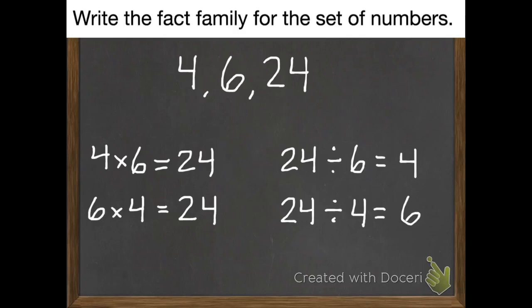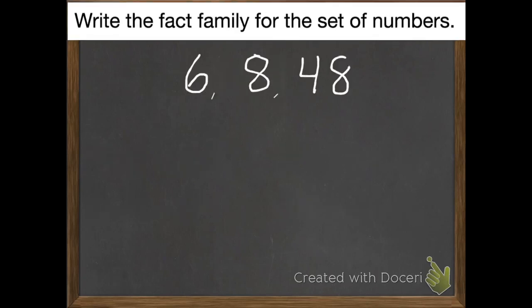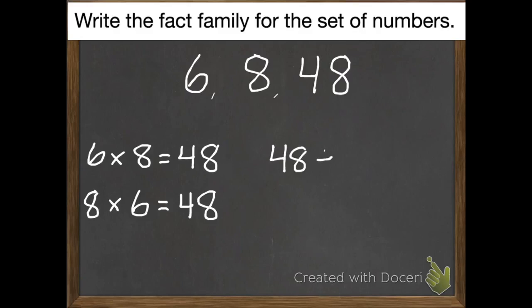Here's the second example. Same instructions. This time I'm using 6, 8, and 48. So I start with 6 times 8 equals 48. 8 times 6 equals 48. Then my division. 48 divided by 8 equals 6. And 48 divided by 6 equals 8.